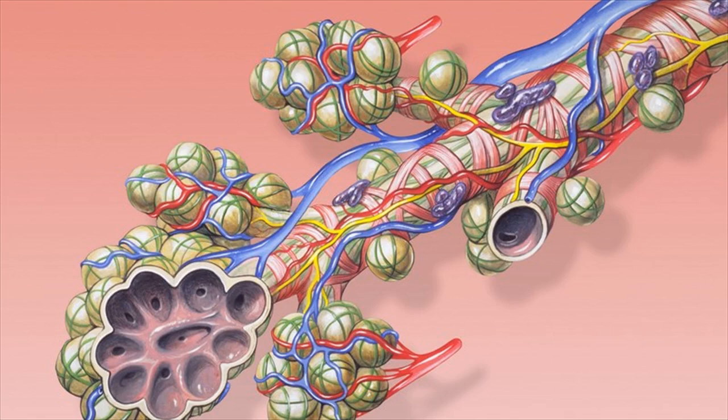Difference between alveoli and alveolar sac. The respiratory subdivisions that make the lungs include respiratory bronchioles, alveolar ducts, alveolar sacs, and alveoli.